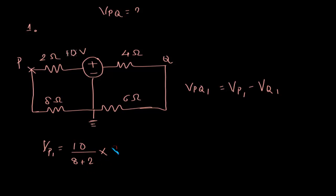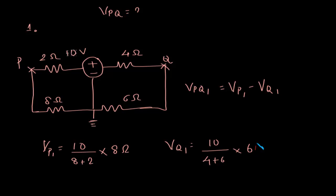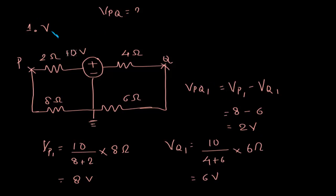The voltage at P is 10 multiplied by 8 divided by (8 plus 2), that is the current into the 8 ohm resistance, giving vp1 = 8 volts. Similarly, vq1 will be 10 multiplied by 6 divided by (4 plus 6), the current into the 6 ohm resistance, giving vq1 = 6 volts. So vpq1 = 8 minus 6 = 2 volts.